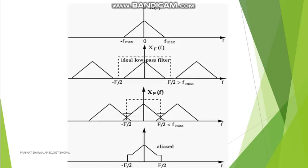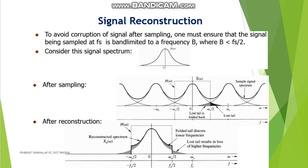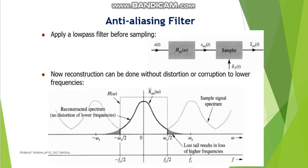This diagram shows the condition when fs is greater than twice fm (no aliasing) and when fs is less than twice fm (aliased signal). For signal reconstruction and to avoid corruption after sampling, fs must always be greater than twice fm. If fs is less than twice fm, we get an aliased signal, and after reconstruction we get a distorted signal. To avoid aliasing, we use an anti-aliasing low pass filter before sampling, which ensures we get a perfect reconstructed signal equal to the original message signal.